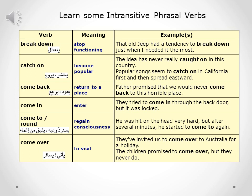The next intransitive phrasal verb is 'come to' or 'come round,' which means to regain consciousness. Example: he was hit on the head very hard but after several minutes he started to come to again.